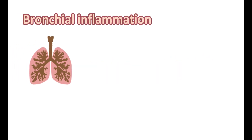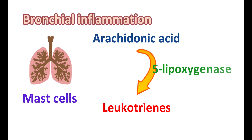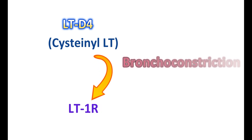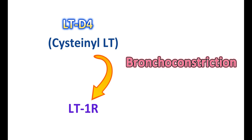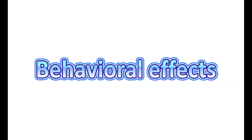Asthma is associated with bronchial inflammation produced by stimulation of cells like mast cells, basophils, and eosinophils. These cells release many inflammatory mediators, including leukotrienes, which are produced from arachidonic acid by the enzyme 5-lipoxygenase. Among these leukotrienes, leukotriene D4 is one of the primary targets for Montelukast. Leukotriene D4 is a cysteinyl leukotriene that acts on leukotriene type 1 (CysLT1) receptors, producing bronchoconstriction. Montelukast specifically blocks these receptors, thereby preventing the action of leukotriene D4, inhibiting bronchoconstriction and reducing inflammation.